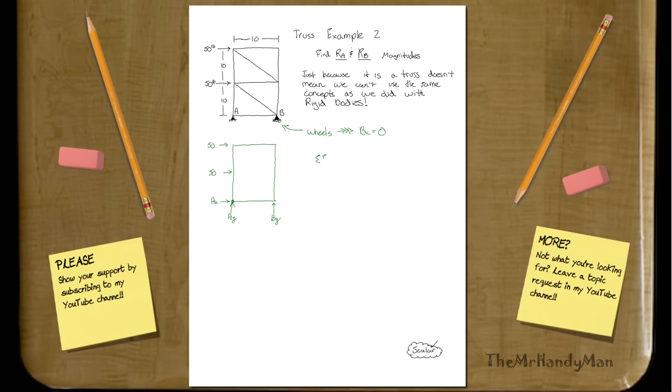We could do our general statics rules where the sum of F_X equals zero. So we just add up all of the X direction or X component things. What we have here is 50 plus 50, and if we just look at our free body diagram, you'll see that we have it in the plus direction, A_X. And that will equal zero. Well, if you solve for that, you're going to get A_X will equal negative 100. So we can solve for that right off the bat.